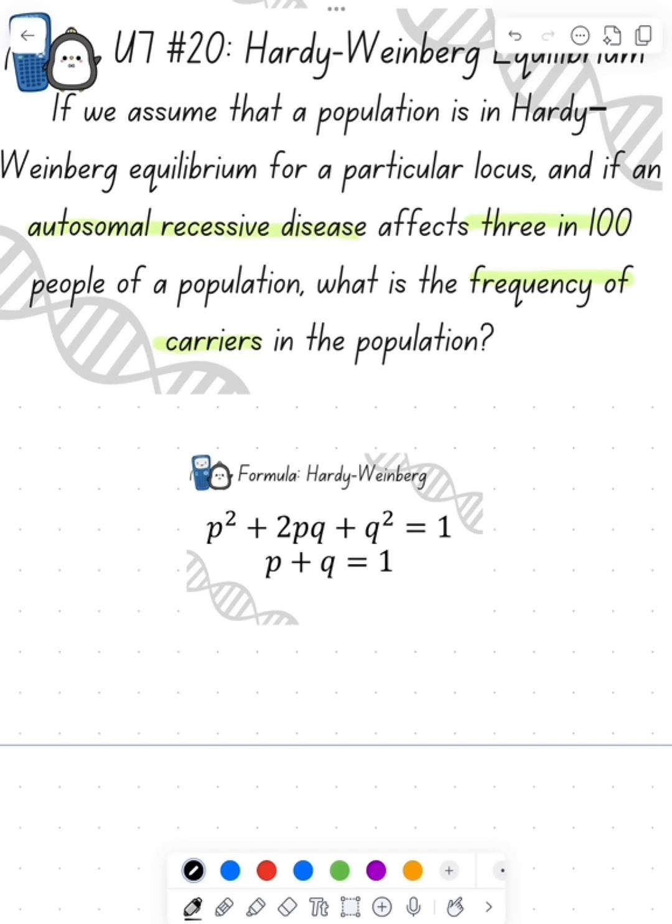So let's look at the equation. Each of these would be frequencies. So p squared would be our homozygous dominant, 2pq is heterozygous, q squared is our homozygous recessive, p is our dominant allele frequency, and then q is our recessive allele frequency.